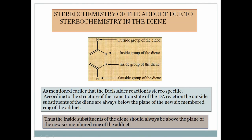For the stereochemistry of the adduct due to the diene, we classify the terminal hydrogens as outsider groups and the internal terminal groups as insider groups. According to the transition state, outsider groups like hydrogens appear below the plane in the six-membered ring transition state, while the inside groups appear above the plane. This is the thumb rule for the diene compound.